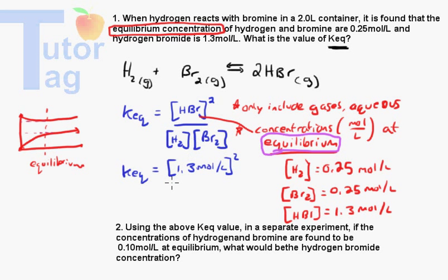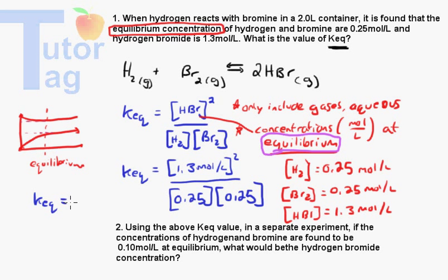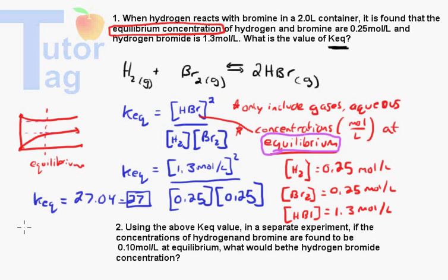We plug them into the formula: Keq equals the concentration of HBr, which is 1.3 moles per liter, squared, divided by the concentration of H2 times the concentration of Br2, which is 0.25 times 0.25. You type that into your calculator and you get 27.04, basically equal to 27. That is the Keq for this reaction.